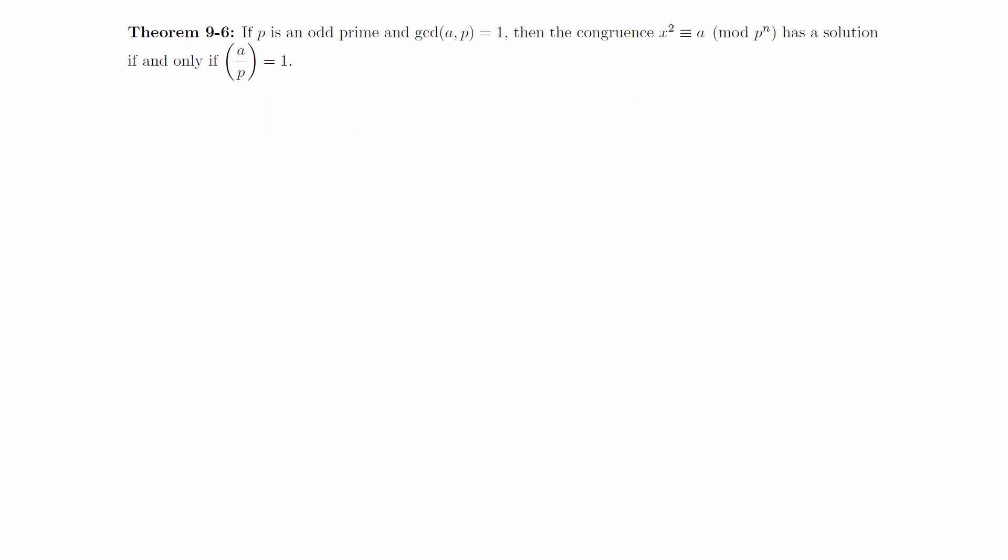If p is an odd prime and the GCD of a and p is 1, then the congruence x squared congruent to a modulo p^n has a solution if and only if (a/p) equals 1.